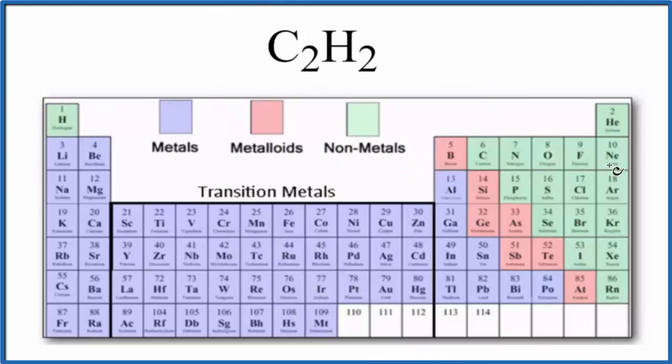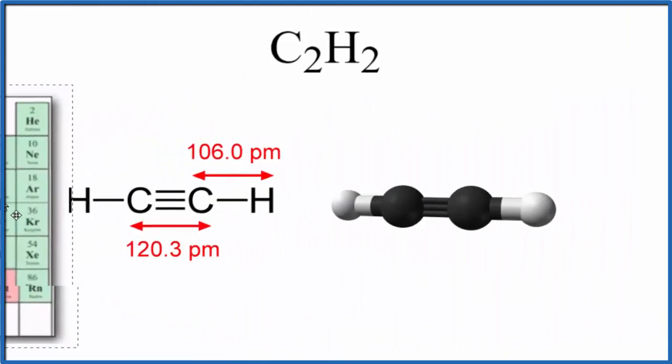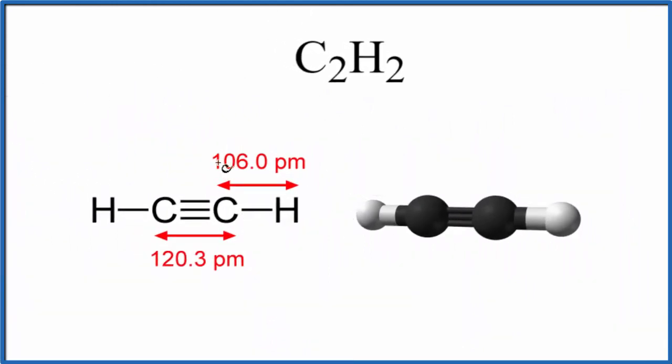Let's take a look at the Lewis structure for C2H2. Here's our structure, and we see these three bonds. Each one of these represents a pair of electrons, so this is a triple bond.